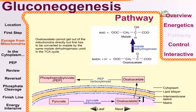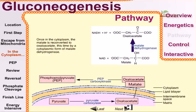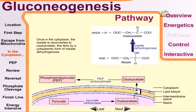Malate can be transported through the mitochondrial membrane via malate transporters. Malate moves to the cytosol, where it is reconverted back into oxaloacetate by cytoplasmic malate dehydrogenase. So the malate dehydrogenase converts malate into oxaloacetate in the cytoplasm.